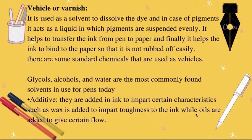The vehicle or varnish is used as a solvent to dissolve the dye, and in the case of pigments it acts as a liquid in which pigments are suspended. It helps to transfer the ink from the pen to the paper and finally helps the ink to bind to the paper so that it is not rubbed off easily. Glycols, alcohols, and water are commonly found in today's pens and are used as vehicle or varnish.